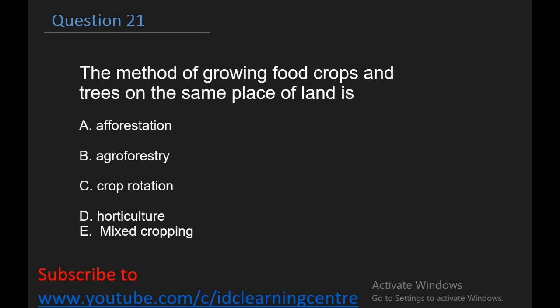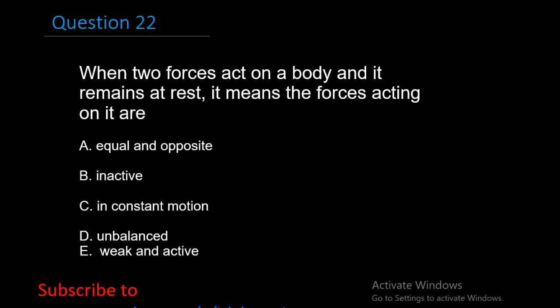Question 21: The method of growing food crops and trees on the same piece of land is A. Afforestation, B. Agroforestry, C. Crop rotation, D. Horticulture, E. Mixed cropping. The right answer is B, Agroforestry. Question 22: When two forces act on the body and it remains at rest, it means the forces acting on it are A. Equal and opposite, B. Inactive, C. In constant motion, D. Unbalanced, E. Weak and active. The right answer is simply A, Equal and opposite.